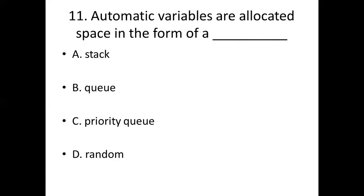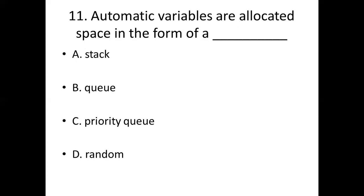Eleventh bit. Automatic variables are allocated space in the form of a blank. Option A: stack. Option B: queue. Option C: priority queue. Option D: random. Answer: Option A, stack. 12th bit.